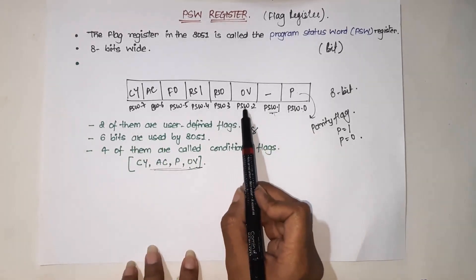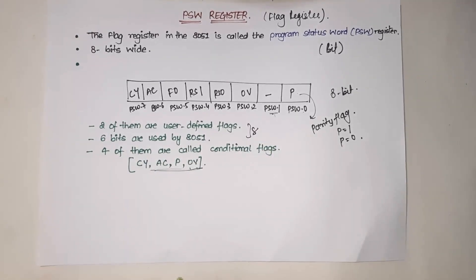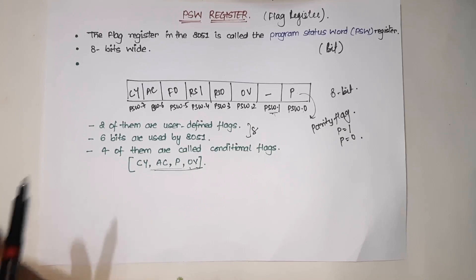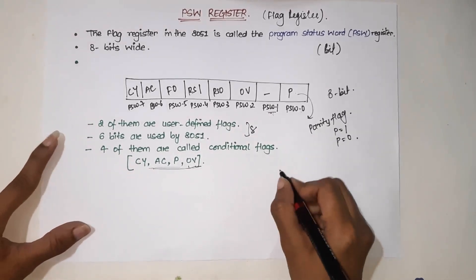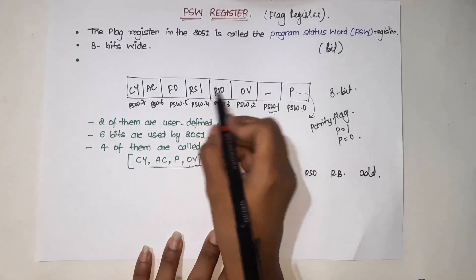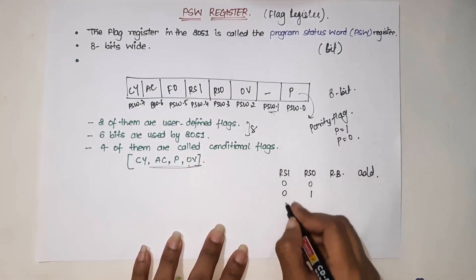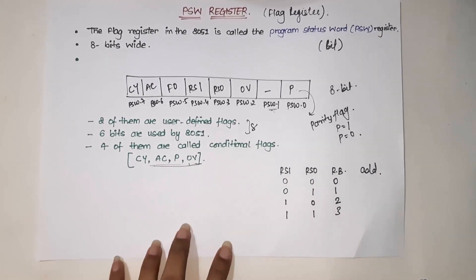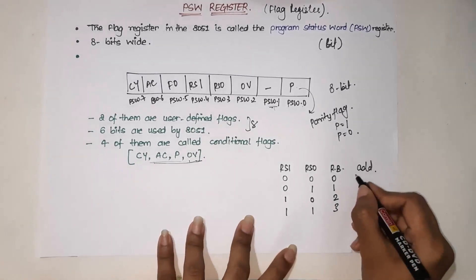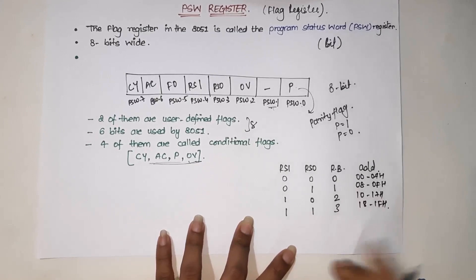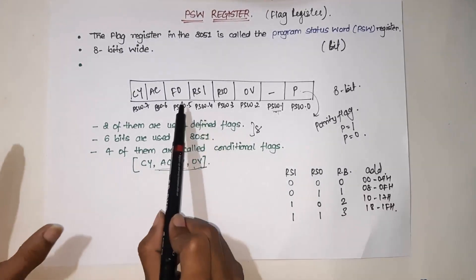Next is OV, the overflow flag — when a signed number operation's result is too large and overflows, this flag is set to 1. RS0 and RS1 are used to switch register banks. When we need to go from Bank 0 to Bank 1, 2, or 3, these bits select the bank. The combinations are: 00 selects Bank 0 (address 00h–07h), 01 selects Bank 1 (08h–0Fh), 10 selects Bank 2 (10h–17h), and 11 selects Bank 3 (18h–1Fh). This will be covered in depth in the register bank session.